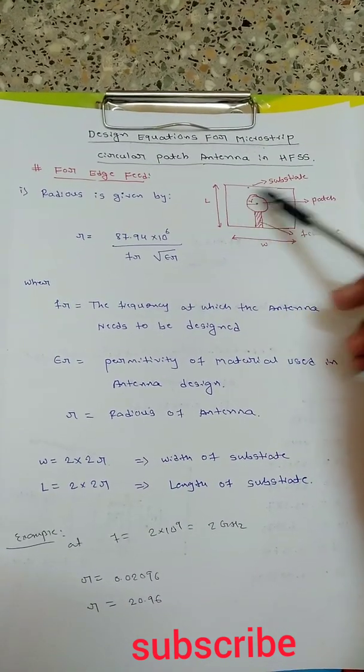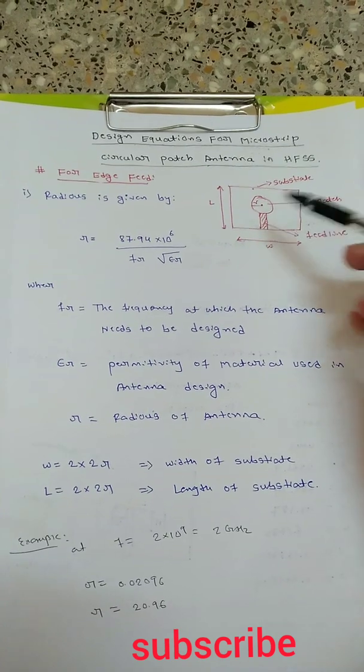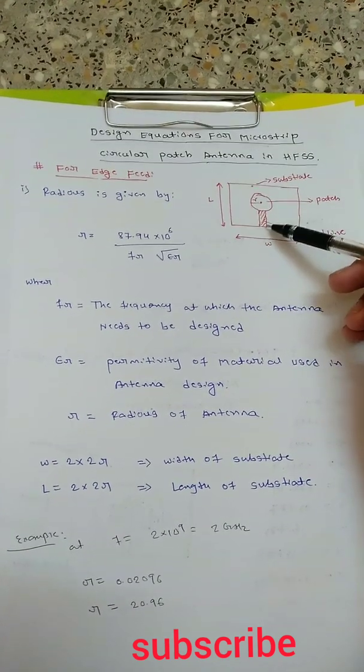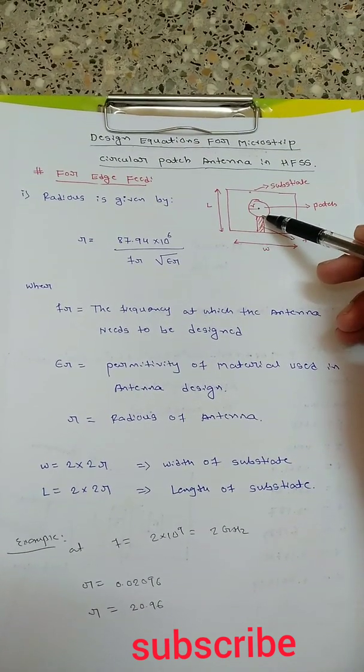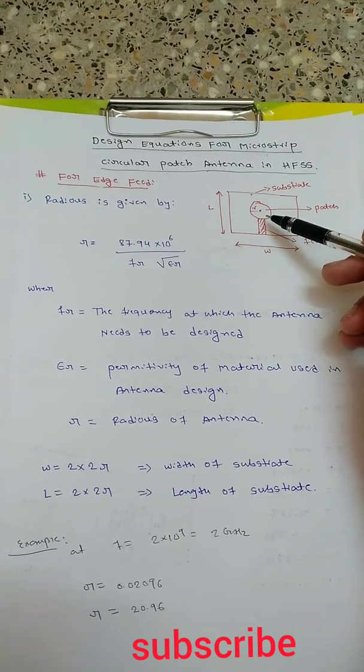Depending on its radius, the size of the patch will be decided. This is the feed which is given to the edge of the circular patch. That's why it is called edge feed.